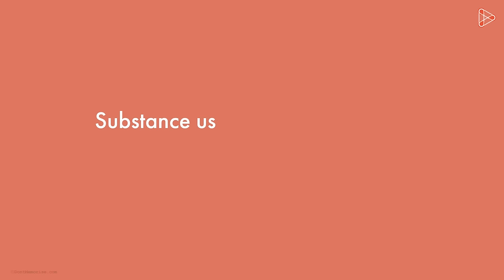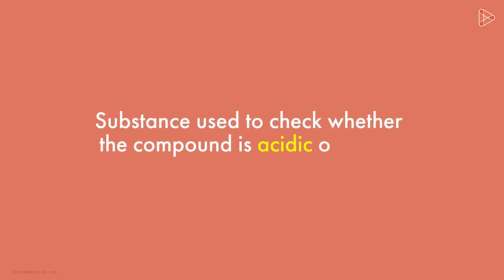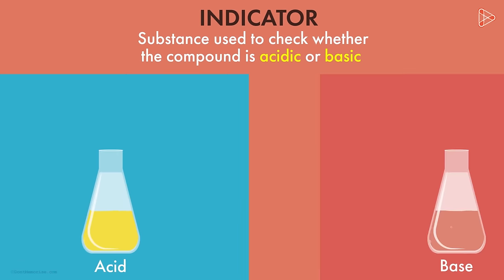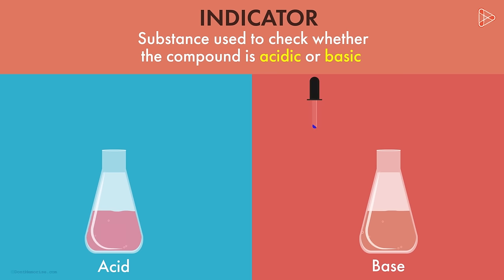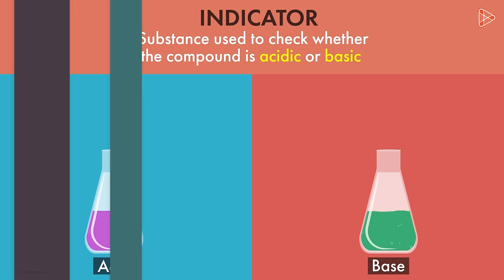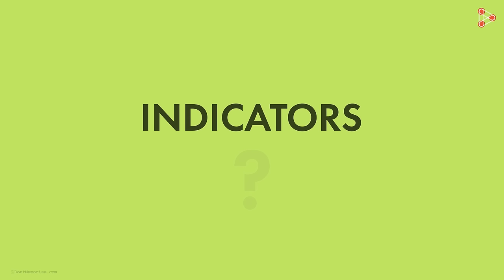The solution has to undergo a few tests. The substance used to check whether the compound is acidic or basic is called an indicator. The indicators indicate by changing their colours. Indicators, when added with acids or bases, show a change in colour. That is how it becomes convenient for us to find out whether the compound is acidic or basic. But what kind of substances are used as indicators? Next, we will look at the various indicators.